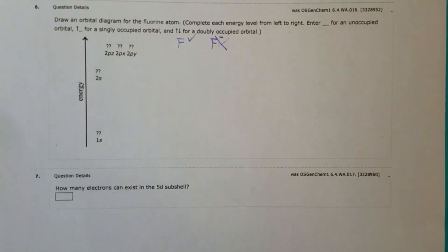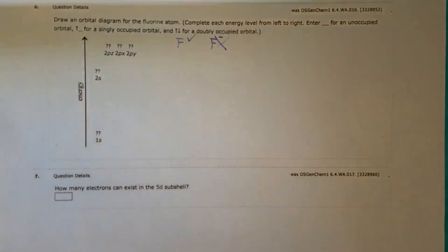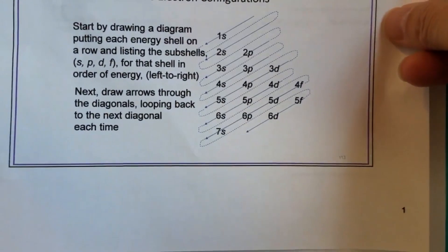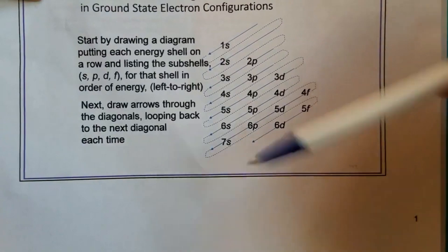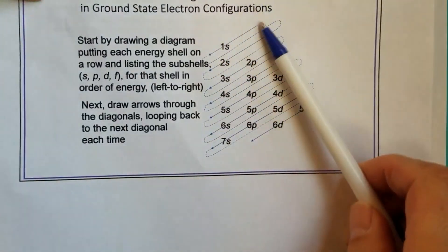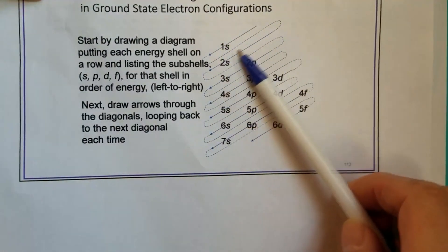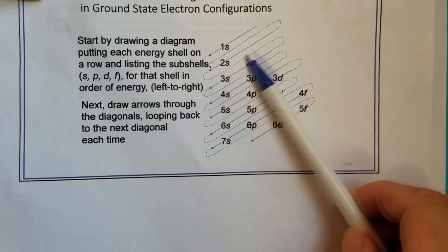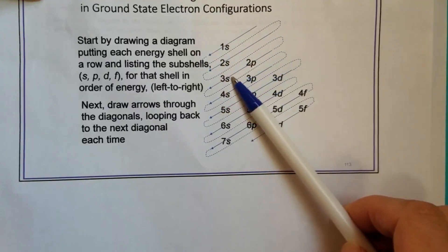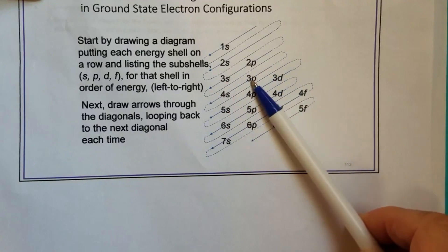So next, what we need to do is just to follow the aufbau principle. Remember, you always start with the lowest energy state, which is you always start with 1s. Okay, so you will have 1s, and then 2s, then 2p, 3s, and then 3p. Okay, so that's the way to go.